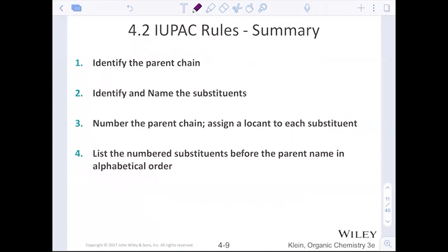So identifying the parent, identify and name the substituents, number the parent chain to assign a carbon to each substituent and make sure that it's the lowest number possible for those substituents. Try out all the areas that you can see and then list the numbered substituents before the parent name in alphabetical order. We ignore di, tri, tetras, pentas, things like that. Excellent.